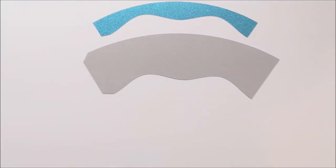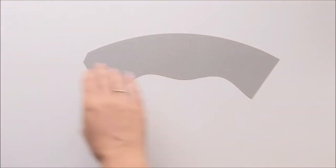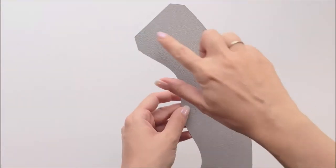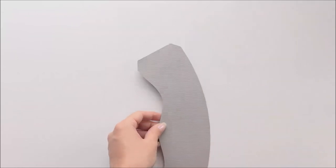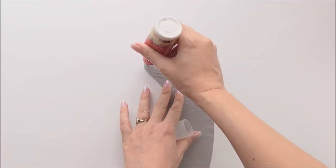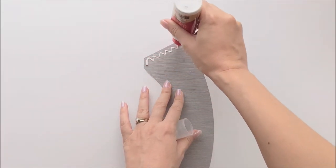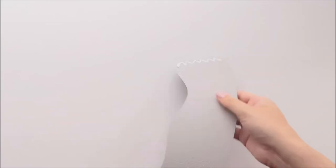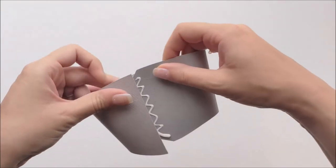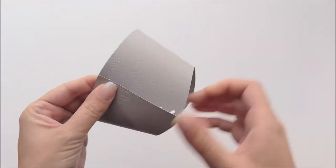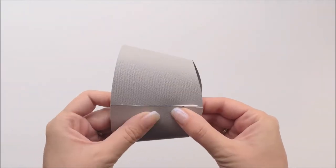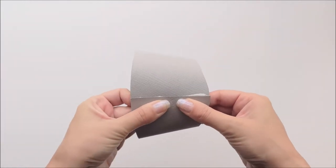So we're going to start by assembling the crown of the hat. You start by applying glue on this side tab here, and then you're going to curve it around to meet the other side, and you want to hold that in place until the glue sets.